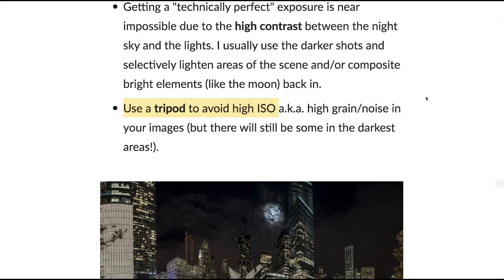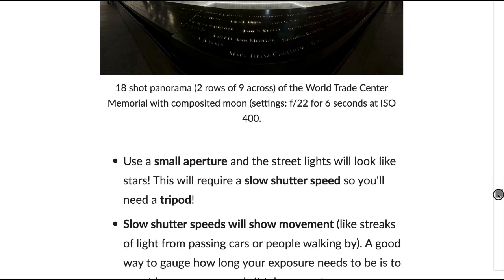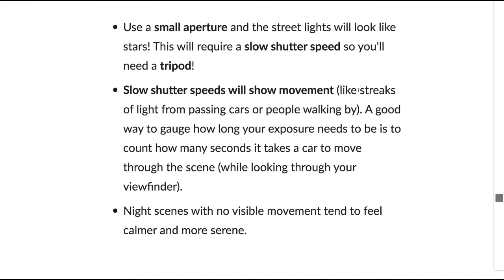Use a tripod to avoid high ISO and the grain or noise that comes with it. Using a small aperture will make street lights look like little stars, but that requires a slow shutter speed. Slow shutter speeds will show movement as streaks of light from passing cars. A good way to gauge exposure length is to count how many seconds it takes a car to move through the scene while looking through your viewfinder, then set your shutter speed to that. Night scenes with no visible movement tend to feel calmer and more serene.